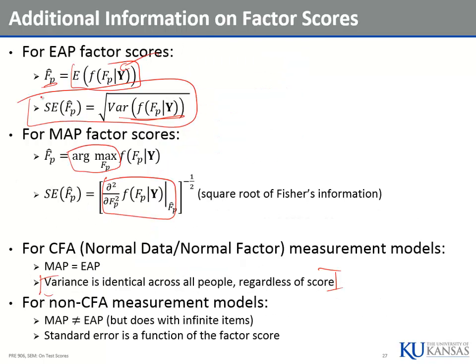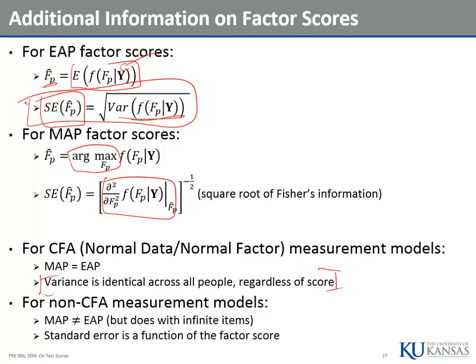If we flip back a slide, the standard error comes from the variance — the square root of the variance of that factor score distribution. That distribution is your error distribution; that's where all your measurement error is. And quantifying it is the standard error. So we can calculate reliability for factor scores using these computed model-estimated parameters, and in just a second I'll calculate that for factor scores and for sum scores as well.